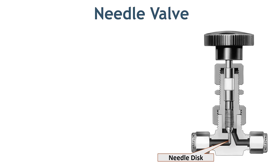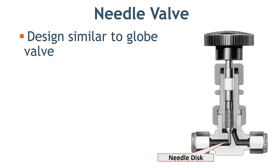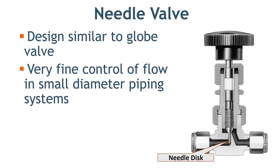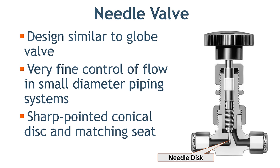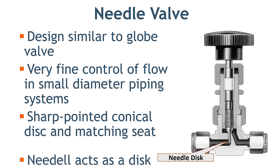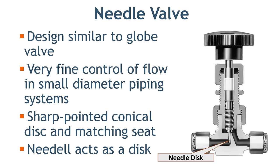Needle valves are similar to globe valves in design, with the biggest difference being the sharp needle-like disk. Needle valves are designed to give very accurate control of flow in a smaller diameter piping system. They get their name from the sharp pointed conical disk and matching seat shape.